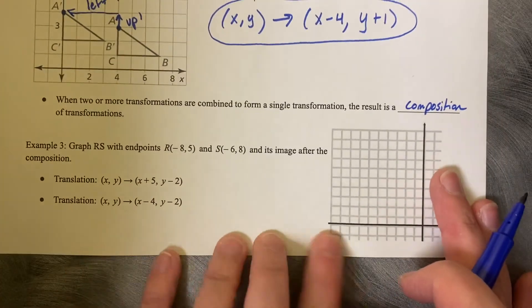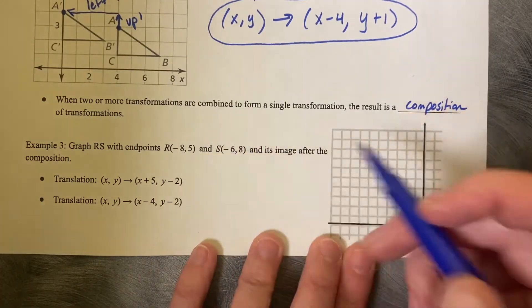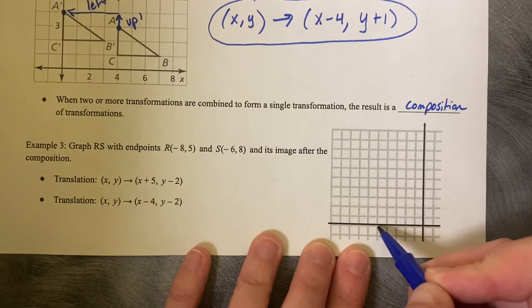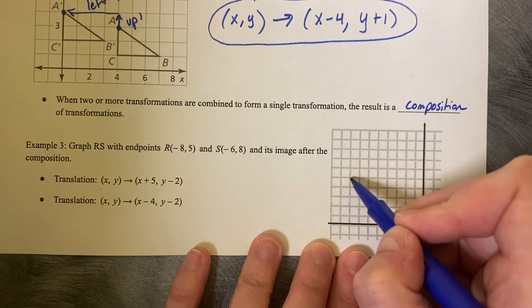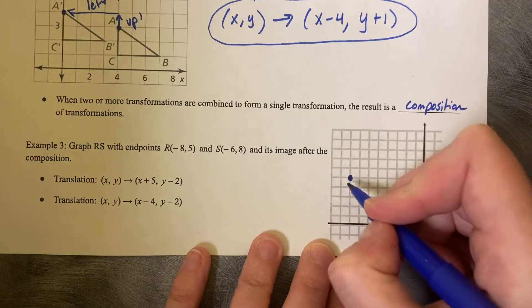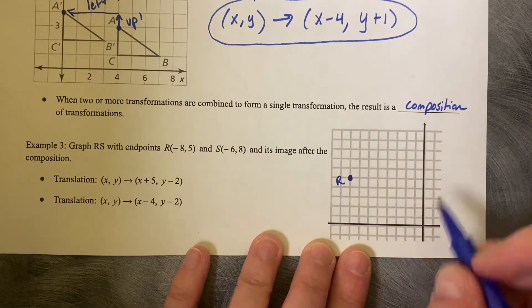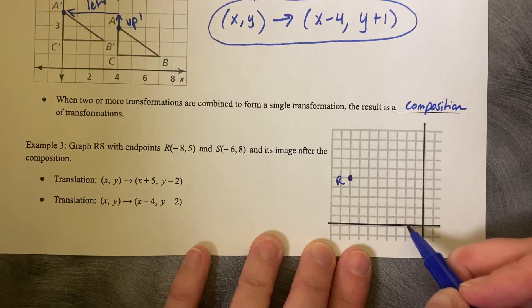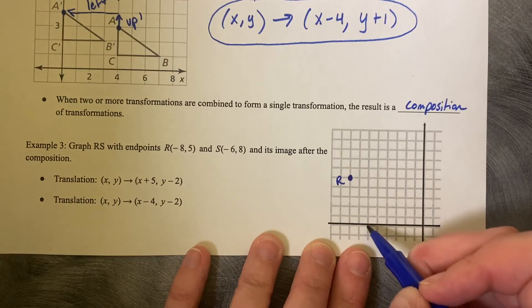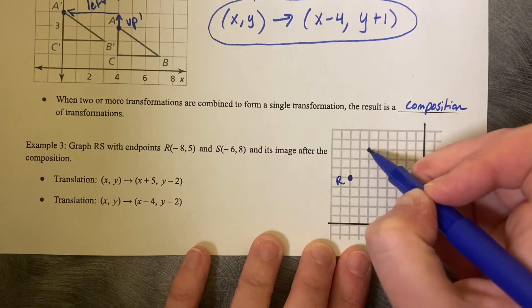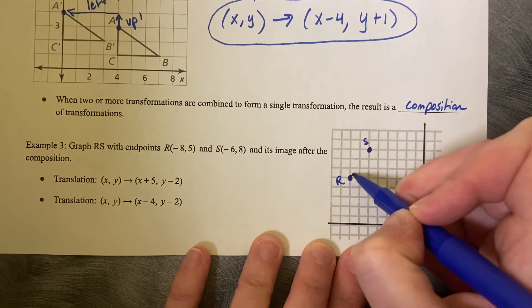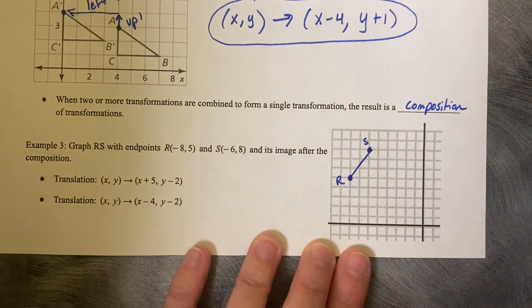So let's start with R and S, so (-8,5), 6, 7, 8, 1, 2, 3, 4, 5, 6, 7, 8, 1, 2, 3, 4, 5, 6, 7, 8. So there's RS.